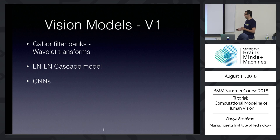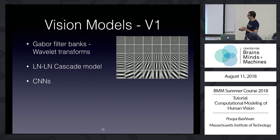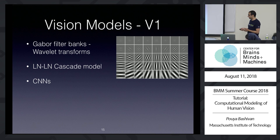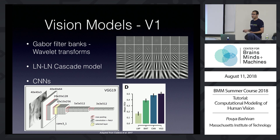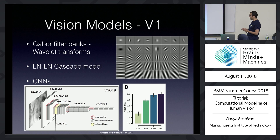Moving to V1, models here are very similar to what we had for the retina. The classic model for V1 is basically a bank of Gabor filters or wavelet transforms — gratings with different orientations and different spatial frequencies. We also have CNN models, but the difference here is that it's a larger CNN not trained to predict neural activity, but trained for object categorization on a larger dataset. It's been shown that the earlier layers of such a network are a good predictor of V1 cell activities. CNN and VGG models perform better than classic models for neurons in this area.